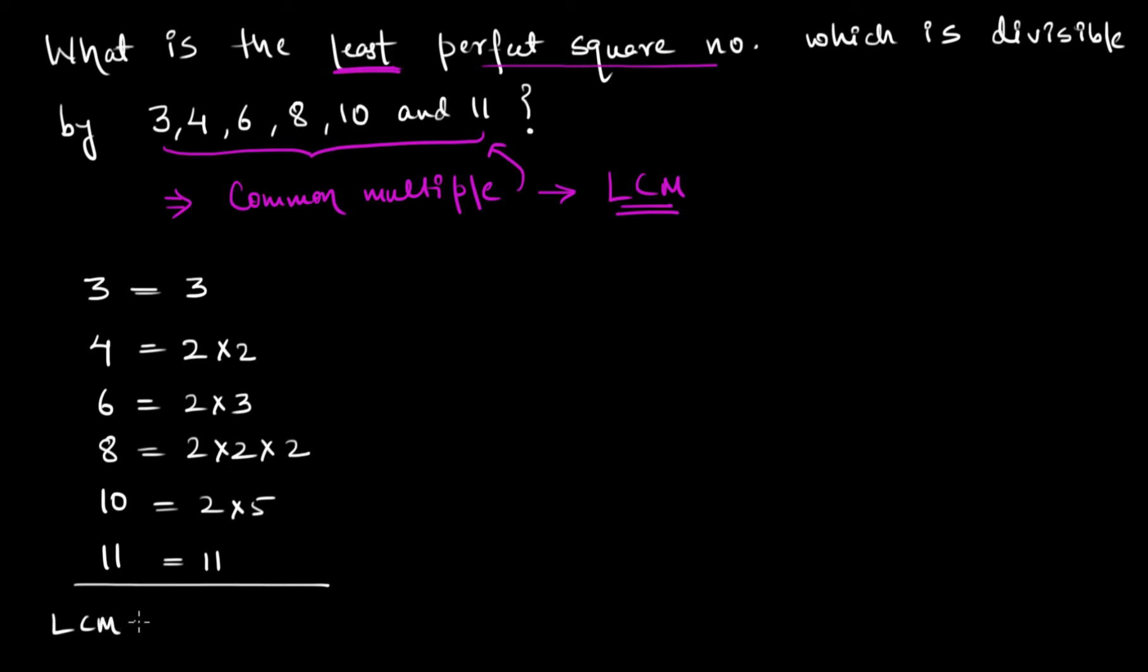Their LCM will be equal to the maximum possible powers of all the prime factors that I can pick out. I can pick out three 2s from here: 2 times 2 times 2. The 3, I can pick out one 3 here, one 5 and one 11.